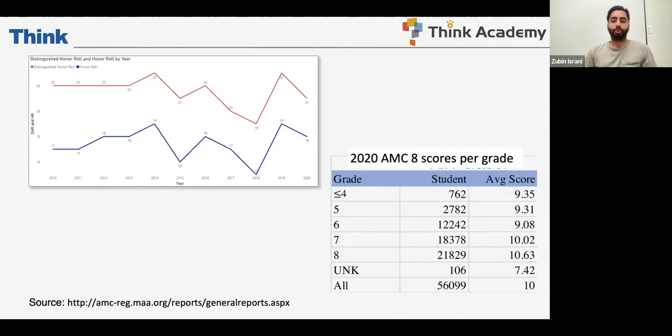For grade five, the score was about nine, even though 2,000 students took it at that grade level. For grade six, it's again nine. Grade seven and eight, naturally, is a little higher at the average score of 10.